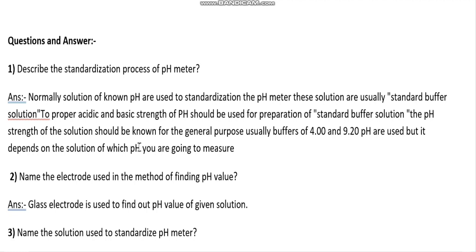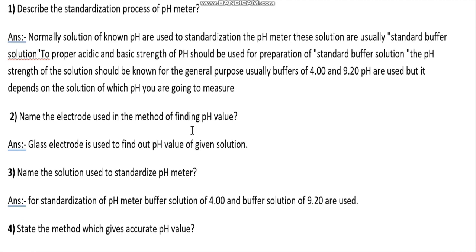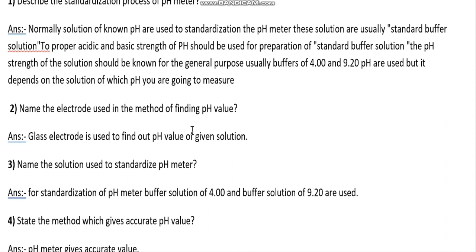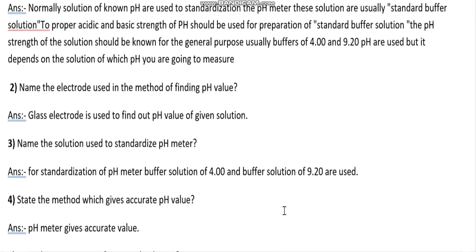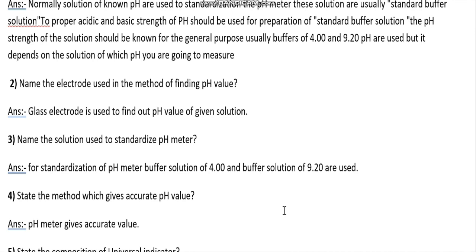Name the electrode used in finding pH value: a glass electrode is used. Name the solution used to standardize the pH meter: buffer solution of pH 4 and buffer solution of pH 9.2 are used. State the method which gives accurate pH value: the pH meter gives accurate pH value.